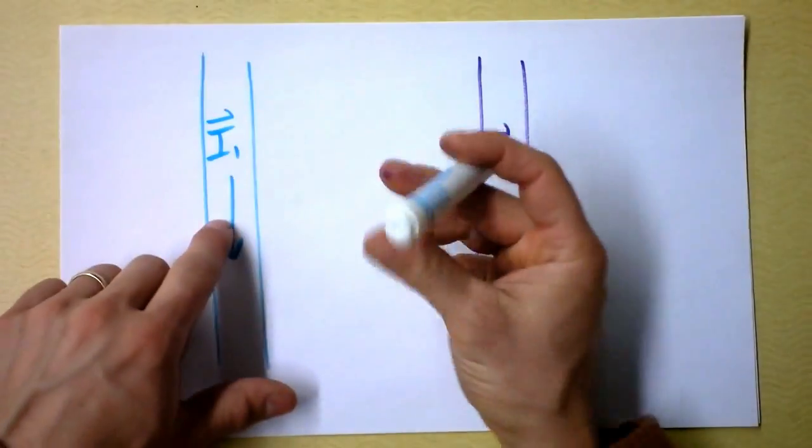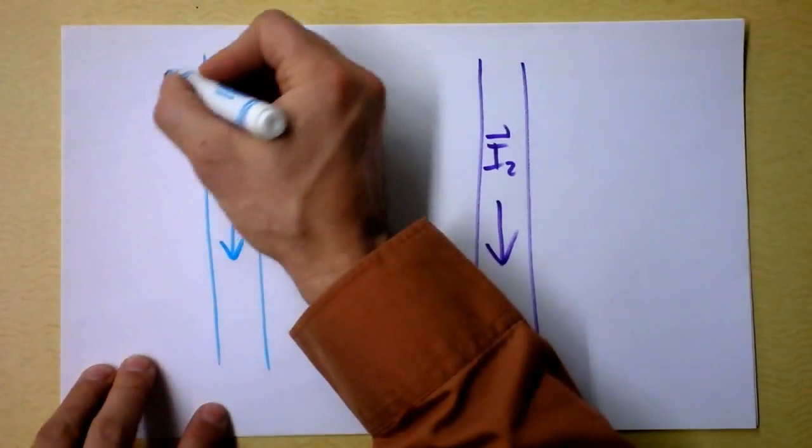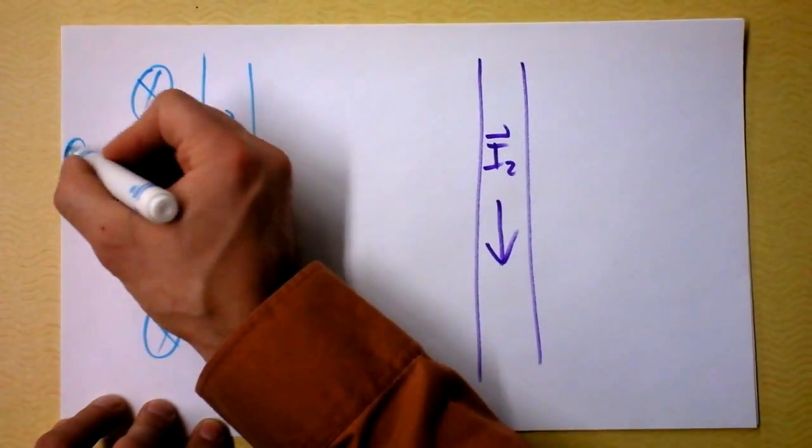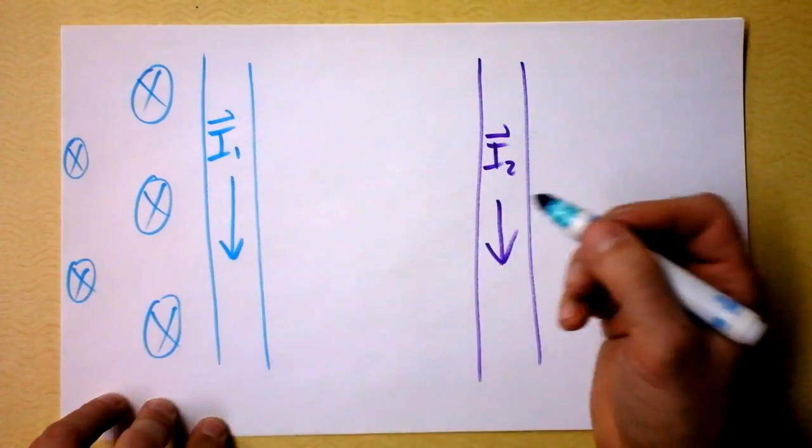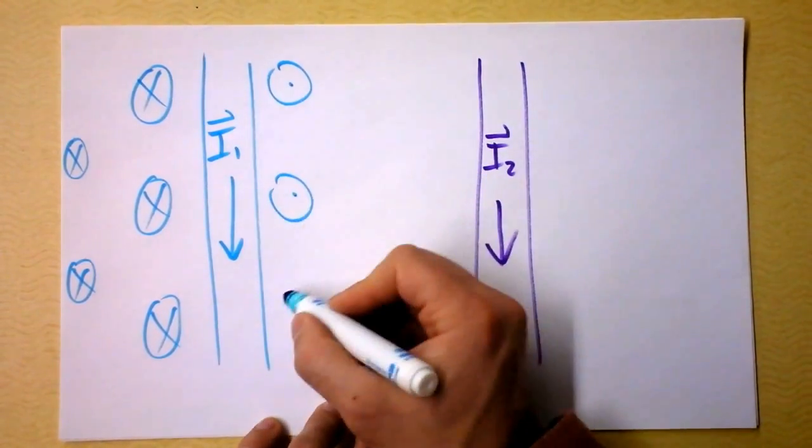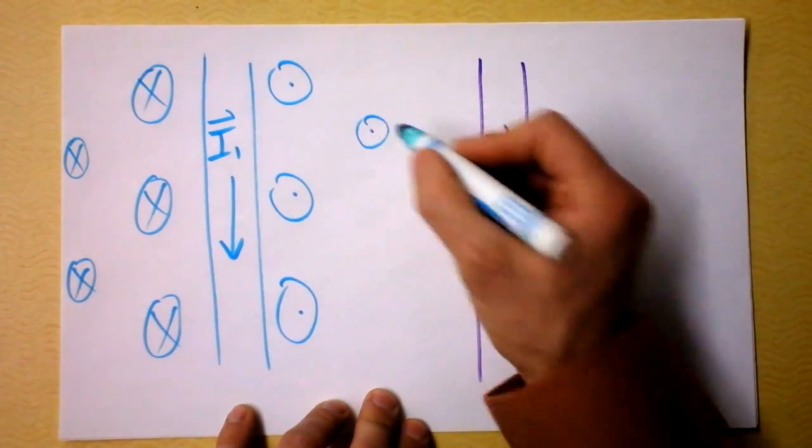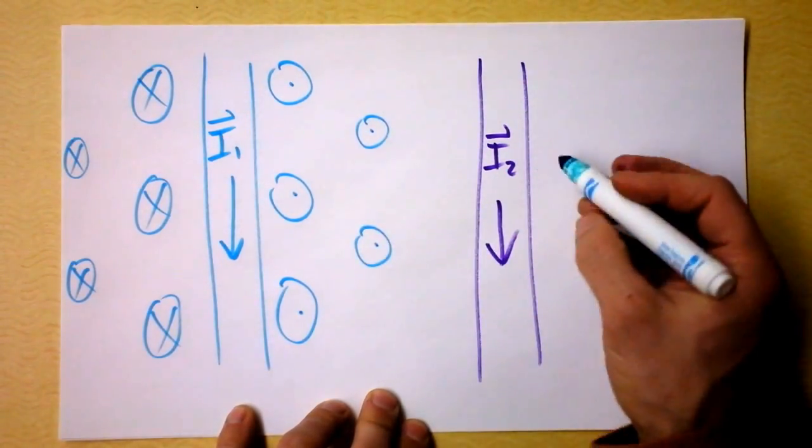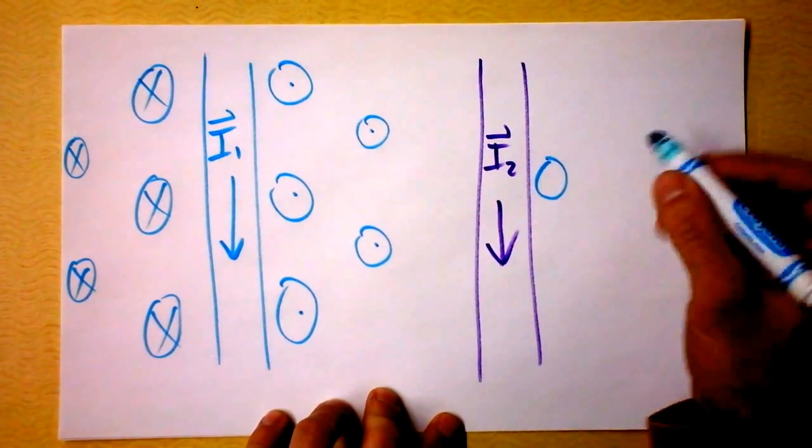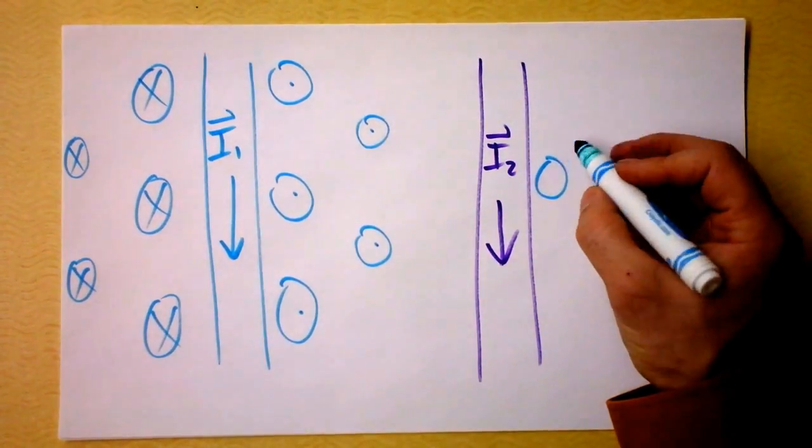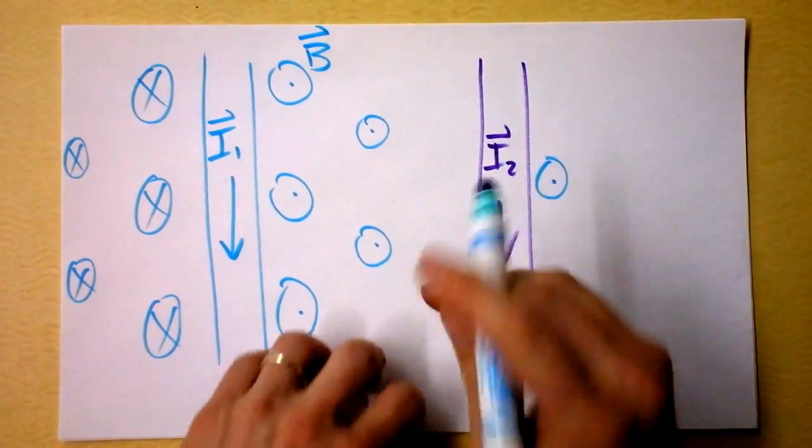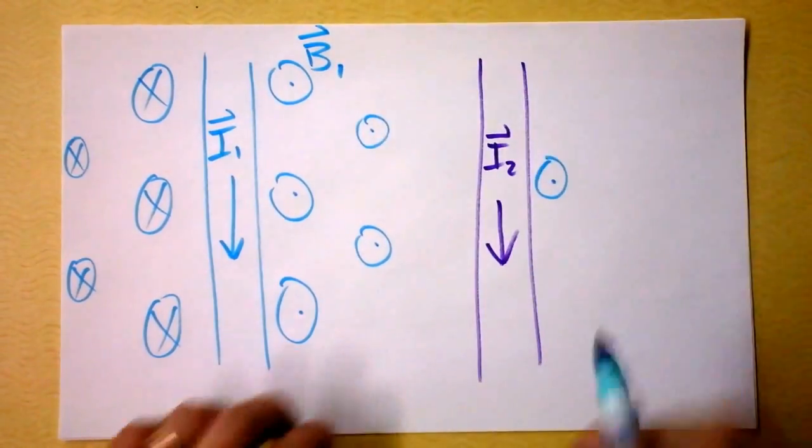And I'm going to draw the magnetic field caused by wire 1. It's in over here, in, and in, and in, and a little bit weaker further out, but still in. And over here, it's out, and out, and out, and a little bit weaker over here, out, out. And there's still, even way over here, there's still some magnetic field caused by wire 1. And so I'll label that, all these blue circles are magnetic field caused by wire 1.